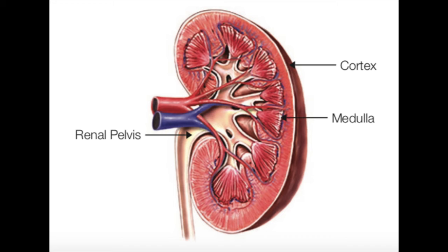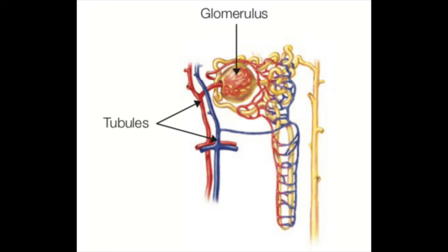The medulla, the inner layer, contains 20% of the nephrons. These nephrons also filter the blood, but have the added responsibility to concentrate urine. This becomes an important diagnostic tool. The renal pelvis is the start of the collecting system, containing the collecting tubules and the ureter. The nephron, the functional unit of the kidney, has about 1 million nephrons per kidney.